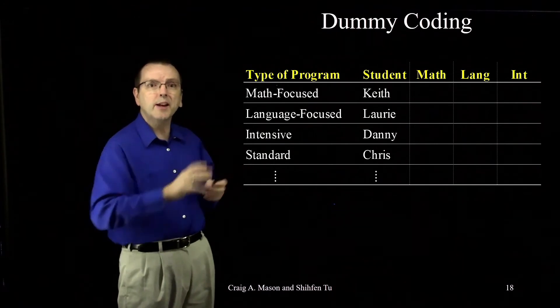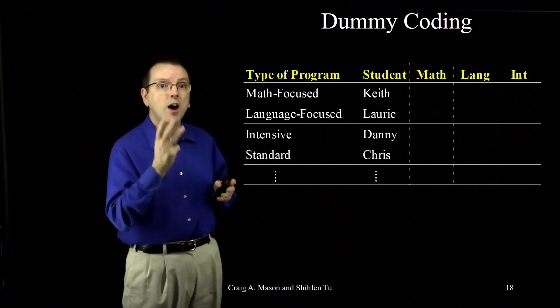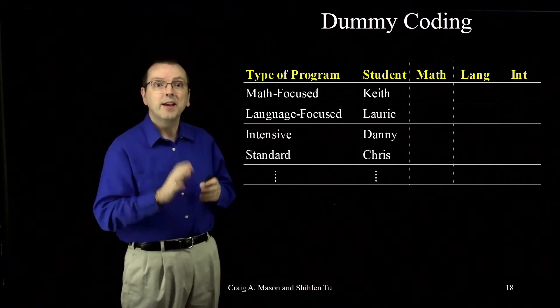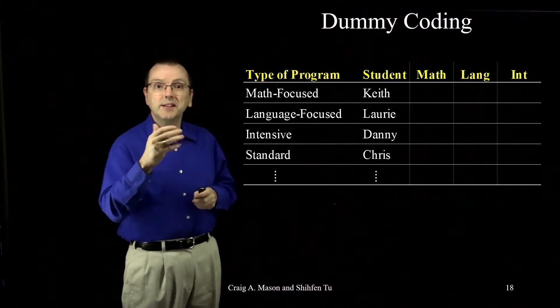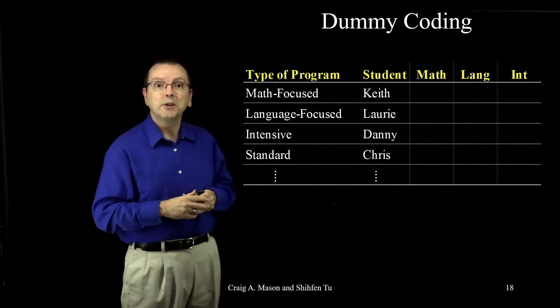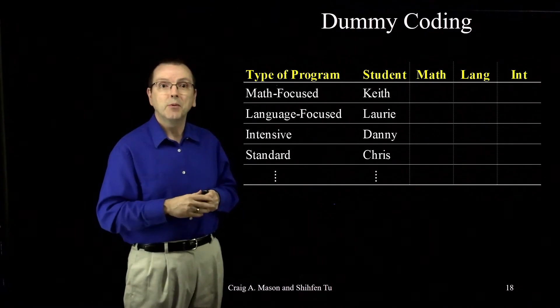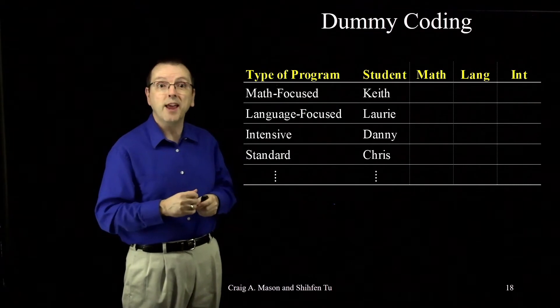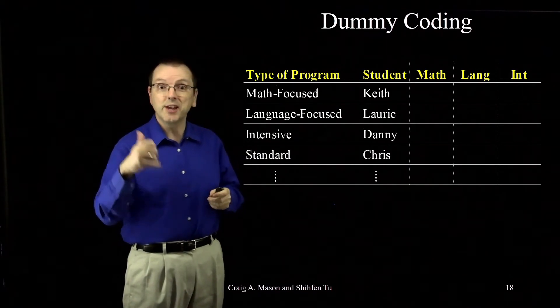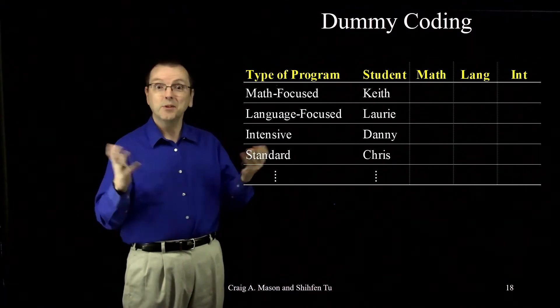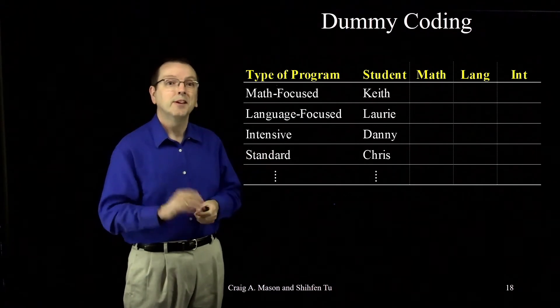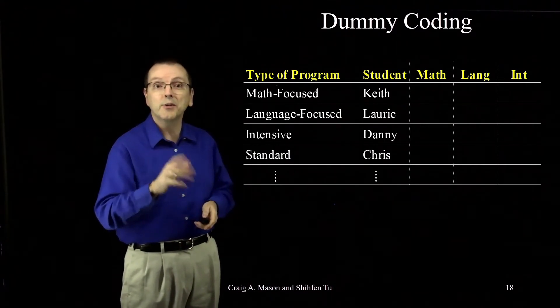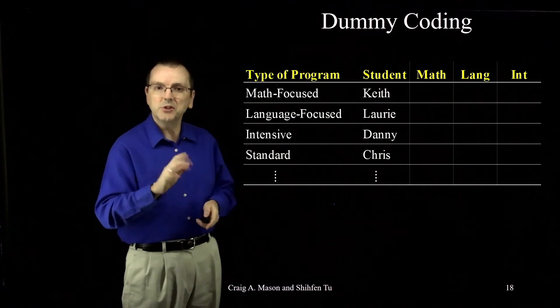Here's what the data would look like. Every student has all three variables and they'll have values on all three variables. Let's start with Keith. He's in the math-focused program. So how would that be coded? Well, we just go one by one by one for each of the three dummy codes and ask, is Keith in this group? If the answer is yes, we code it one. If the answer is no, we code it zero. Why don't you pause the video and see if you can complete this table all on your own? Restart the video when you're ready.